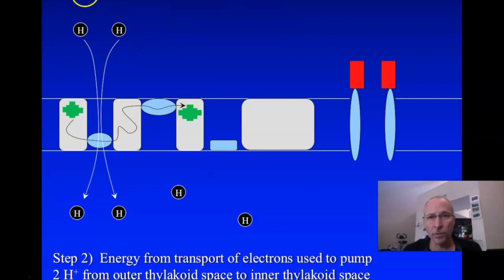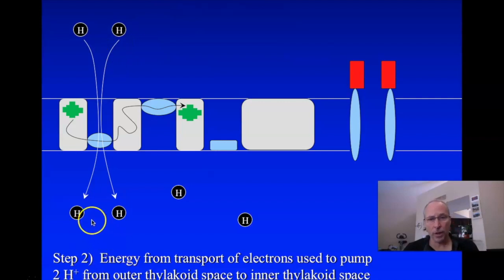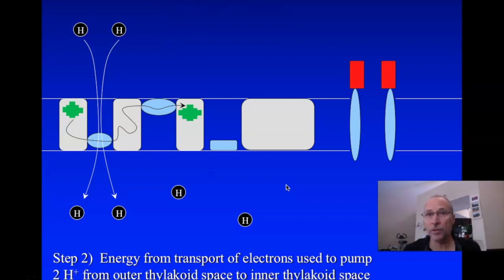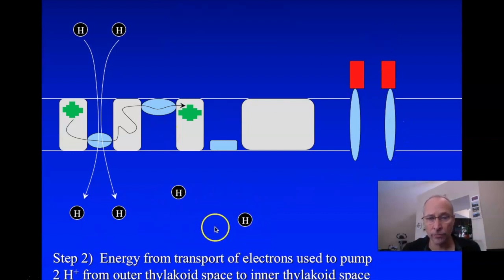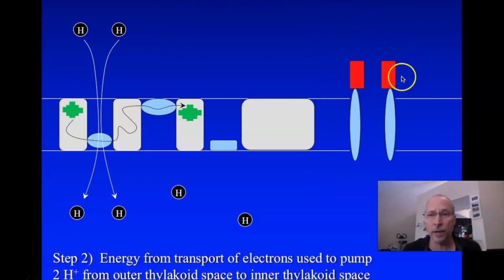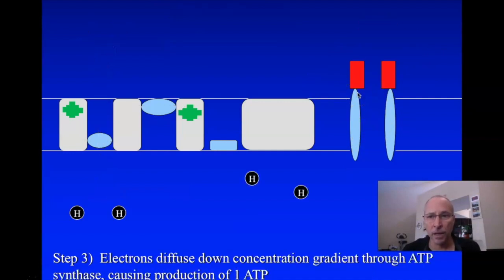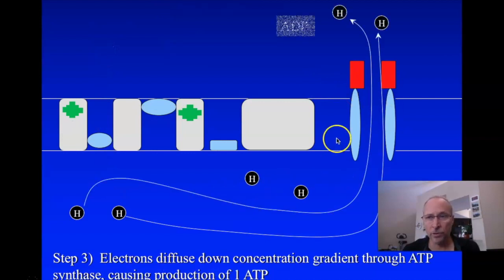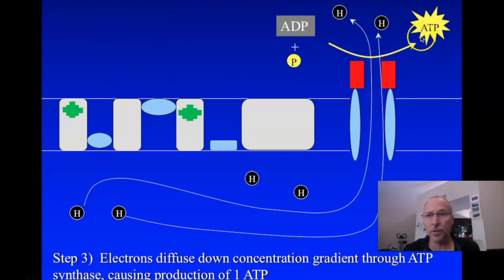Two hydrogens get pumped across — one for each electron on average. These hydrogens then diffuse through the ion channel because there's now a concentration gradient across the thylakoid. As they diffuse through, they transduce that energy: the energy is transduced from the motion of the ions through the channel into ATP, just as we saw before. The electrons go down their concentration gradient through ATP synthase, and ATP synthase makes ATP.